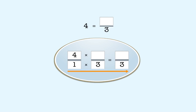Then we multiply 3 times the numerator, 4 also, and we get 12. We've now rewritten the whole number 4 as the fraction 12 thirds. So the whole number 4 can be rewritten as 12 thirds.